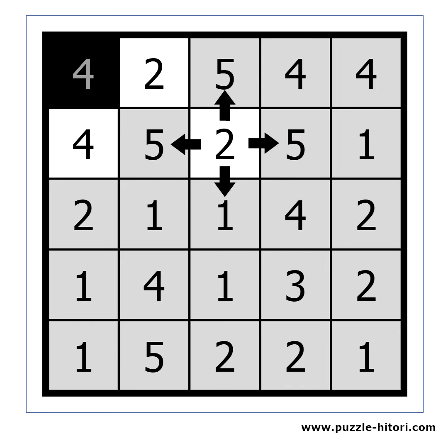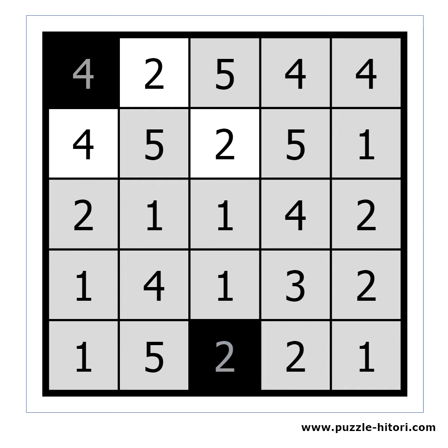Now we can scan the row and the column for twos. And indeed there is a two at the bottom of the column. That cell must be black. Now we can make the neighbor cells white.